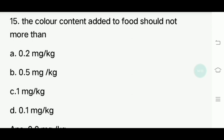Fifteenth question: The color content added to food should not be more than what amount? Options: 0.2 mg per kg, 0.5 mg per kg, 1 mg per kg, 0.1 mg per kg. Answer is 0.2 mg per kg.